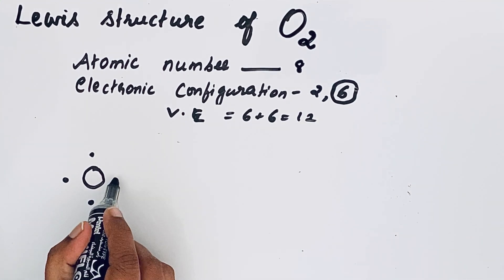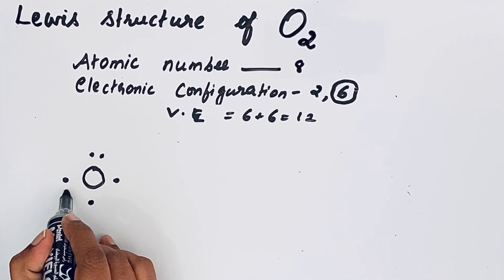Now let us draw one oxygen atom and show its electron dot structure. Oxygen symbol is O. There are 6 valence electrons: 1, 2, 3, 4, 5, 6. That means 2 lone pair electrons and 2 unpaired electrons are present. Only the unpaired electrons can participate in bond formation.